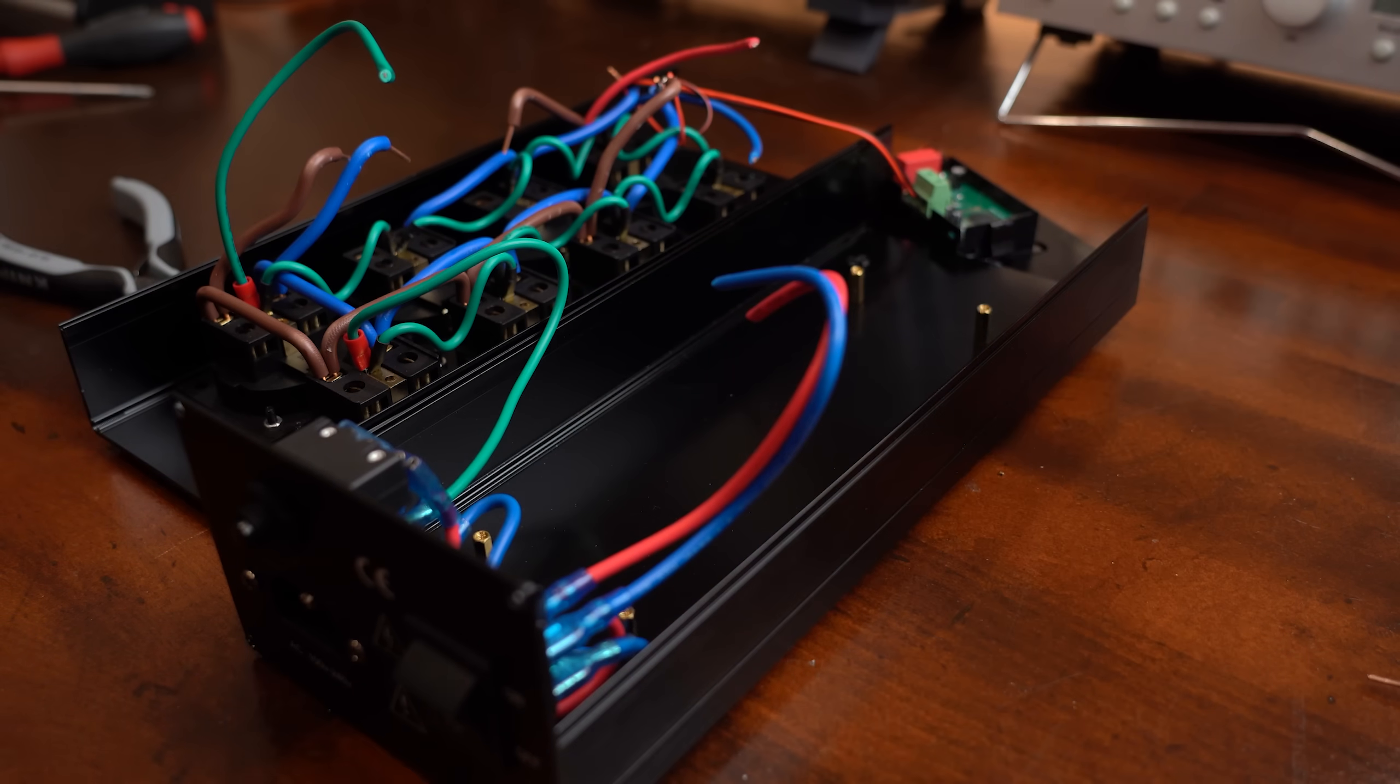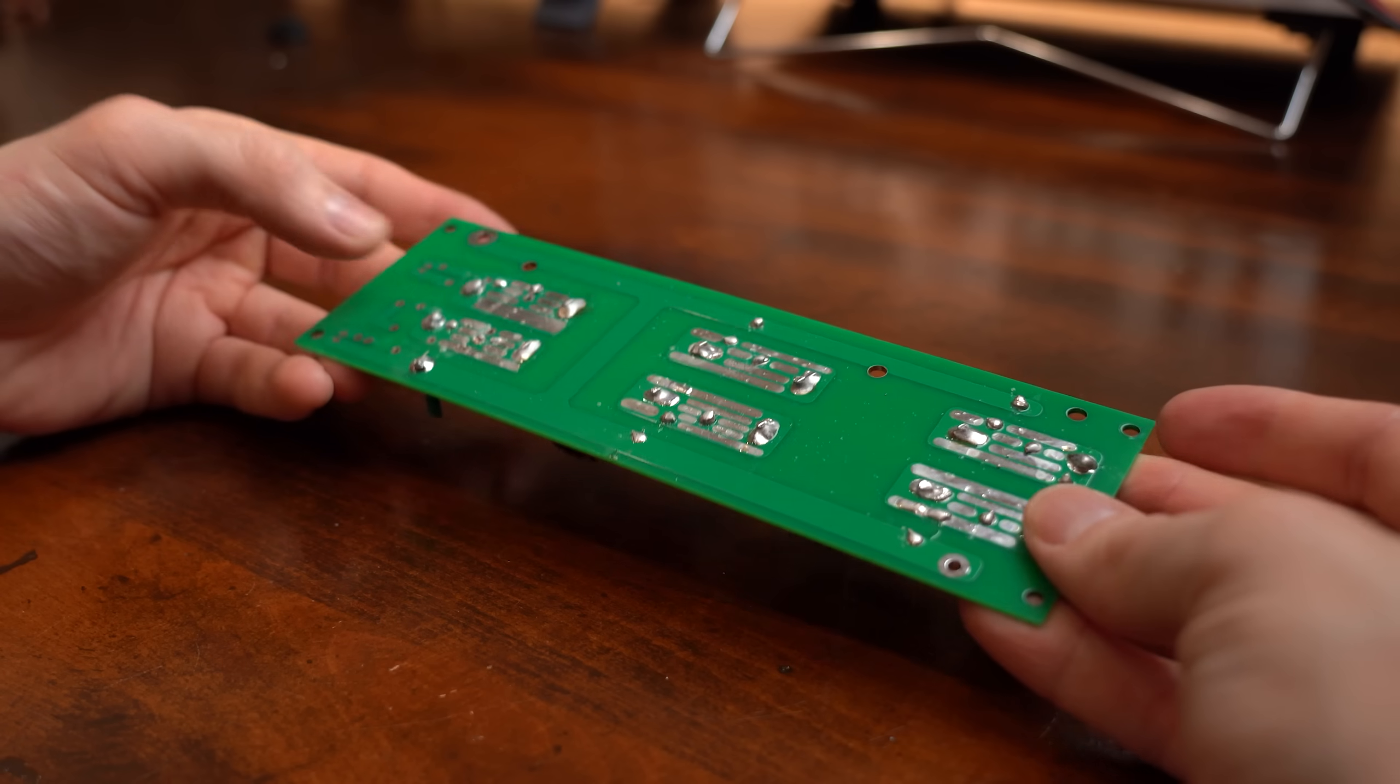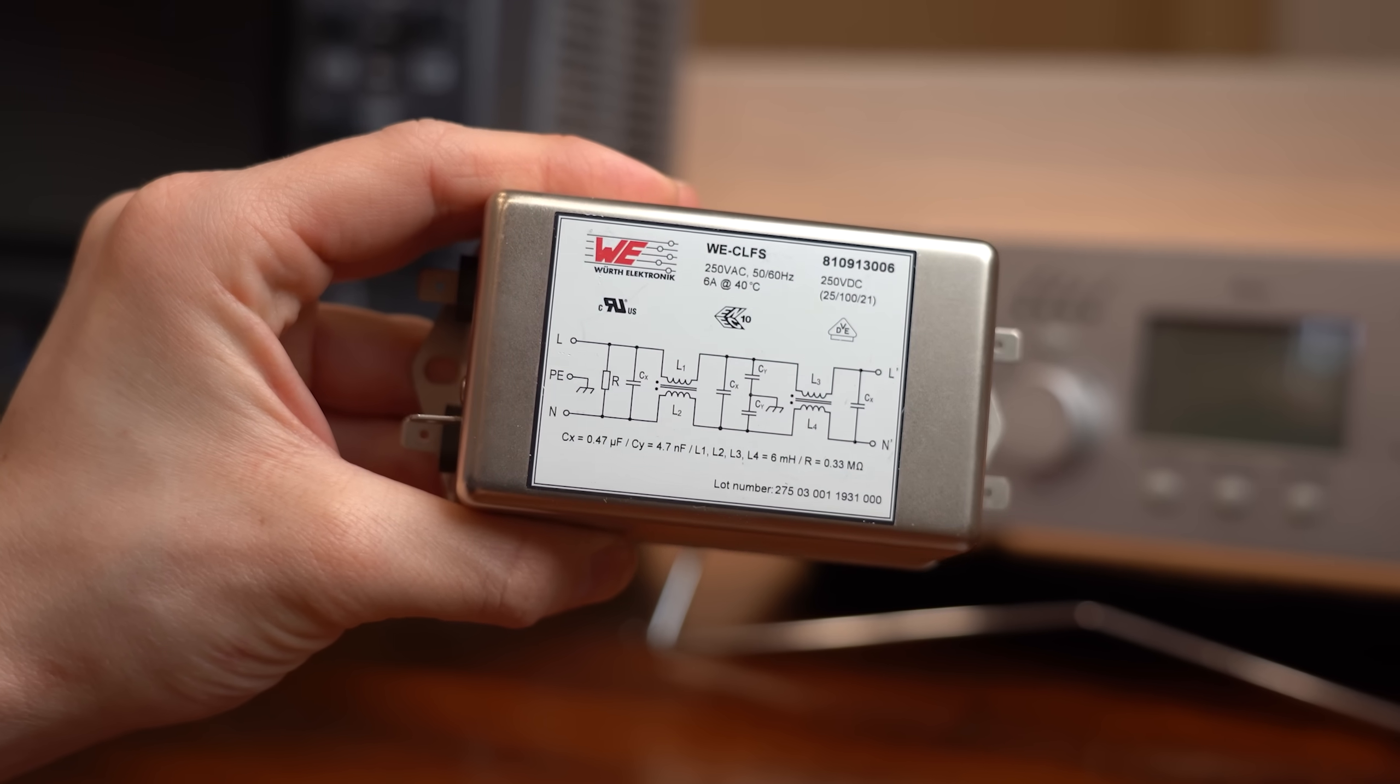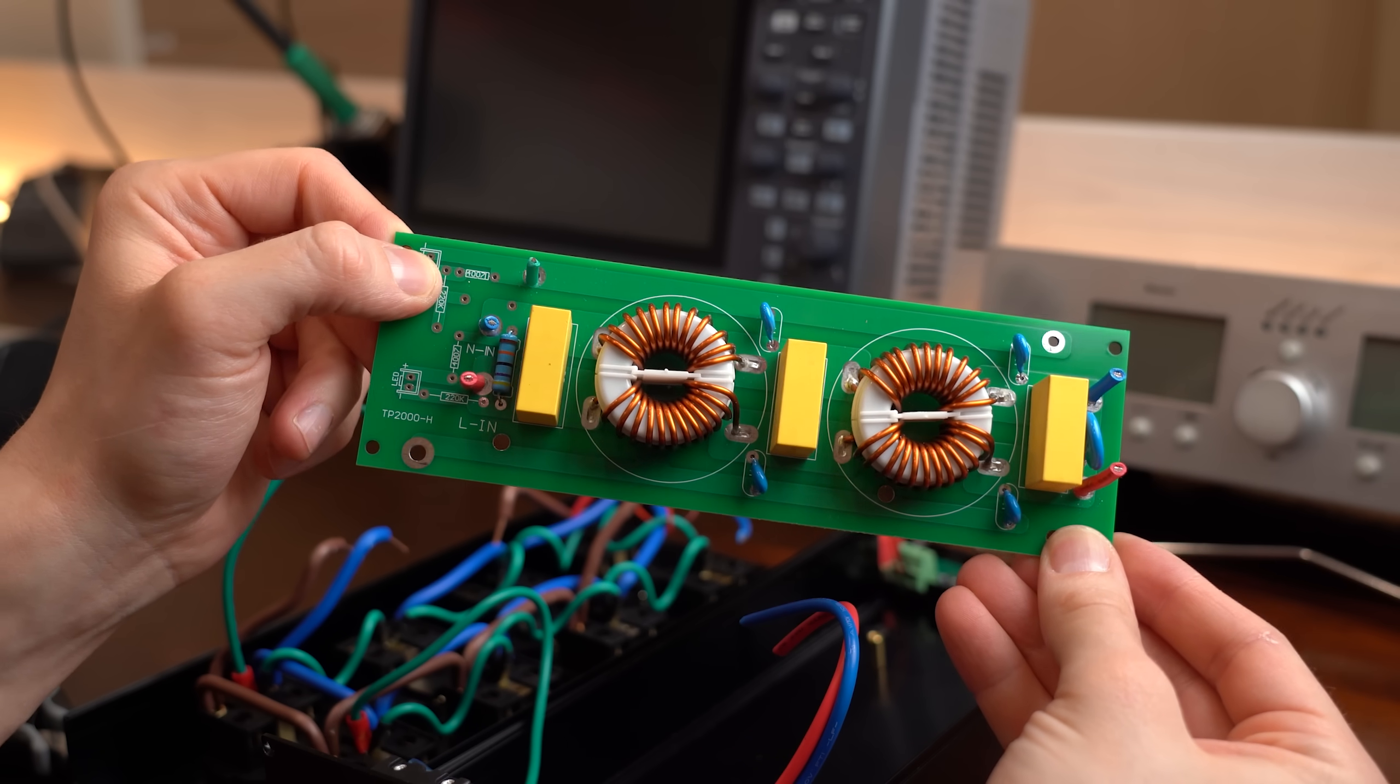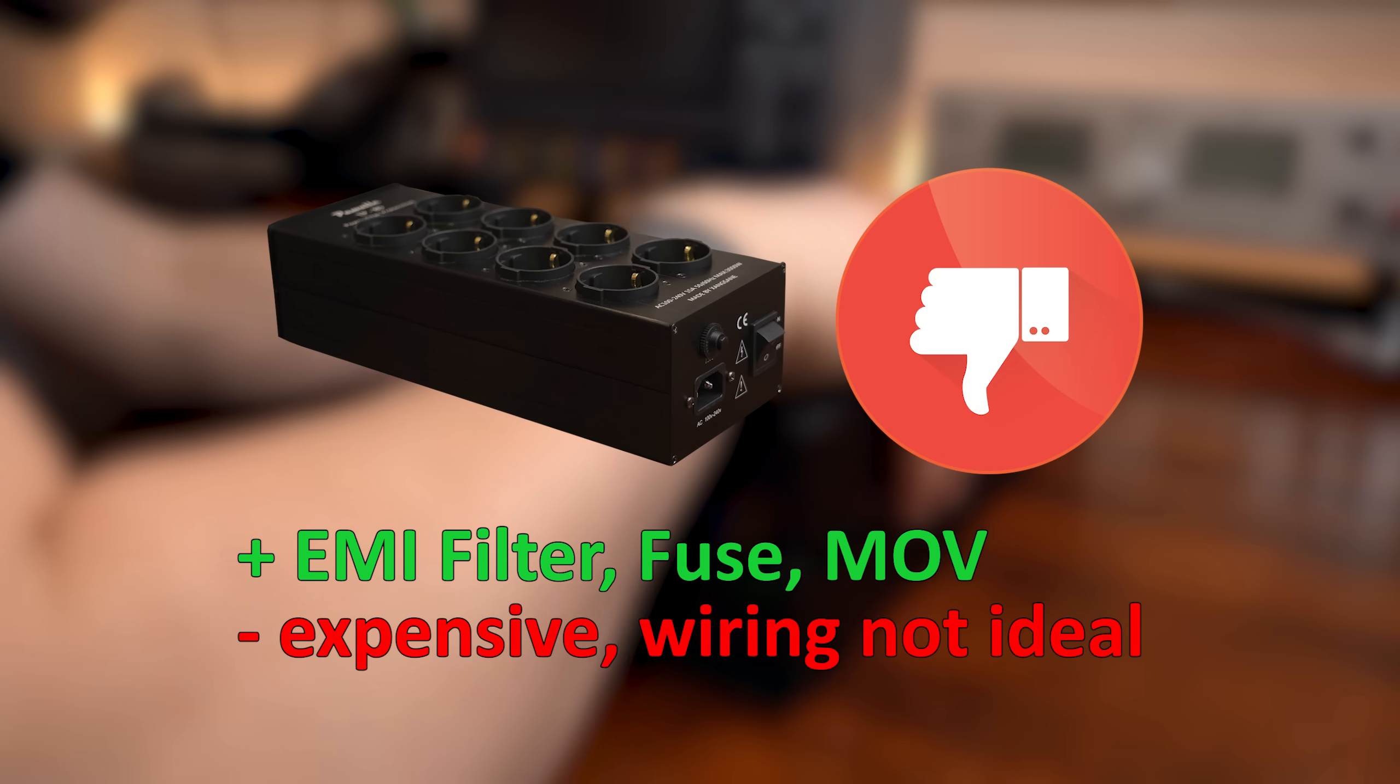And last but not least we got the 2 stage EMI filter that even comes with overvoltage protection at the end here. After reverse engineering its schematic I gotta say that it truly is a 2 stage EMI filter like for example this one right here. In one of my previous videos I showed off how such a filter can help to get rid of interferences. Meaning having such a filter is not a bad thing. However if I combine all the facts here then I gotta say that I would not recommend this power strip.